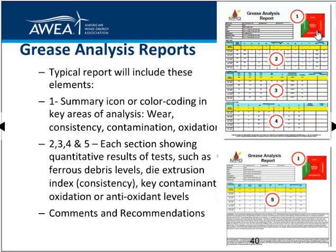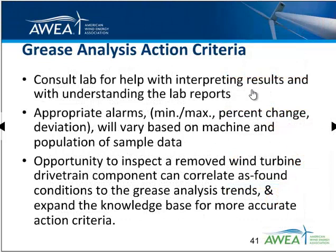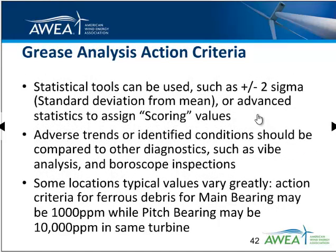Reports can be generated with summary icons giving color coding — red, yellow, green — for wear, consistency, contamination, and oxidation condition, along with monitoring history, trends, comments, and recommendations. When it comes to developing action criteria, consult the lab for help with interpreting results and understanding lab reports. Set appropriate alarms — they might be min or max, or a percent change or deviation, especially in wear trends. If there's ever an opportunity to inspect a removed wind turbine component, correlate that back to the grease analysis trends — that expands our knowledge base for more accurate action criteria going forward.